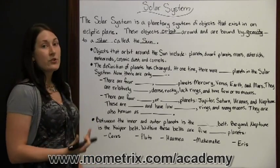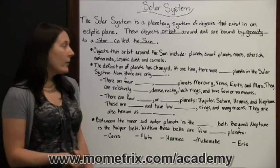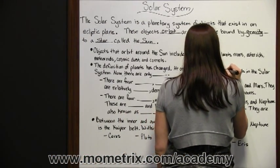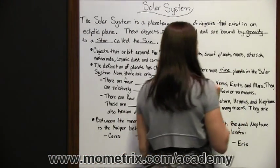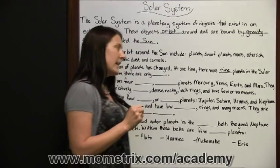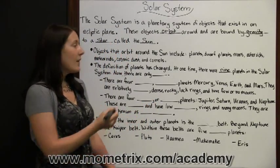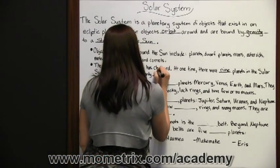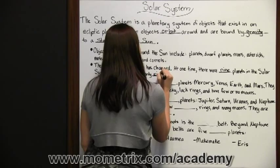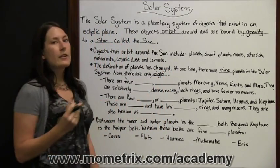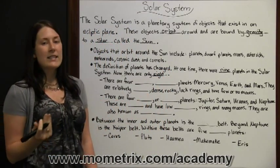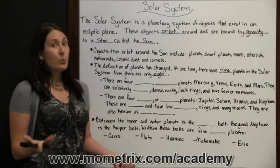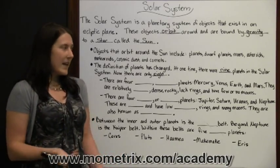The definition of planets has changed. At one time, there were nine objects classified as planets in the solar system. Now there are only eight — nothing happened to the ninth one; it is just no longer classified as a planet. It is classified as a dwarf planet instead.